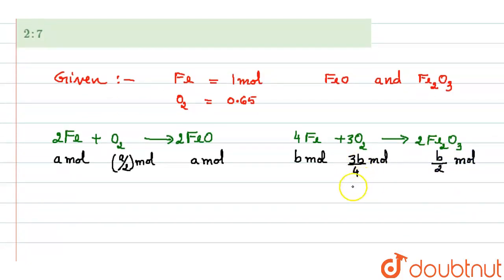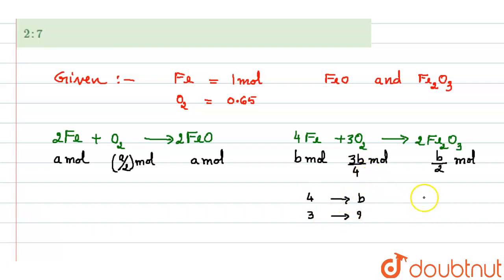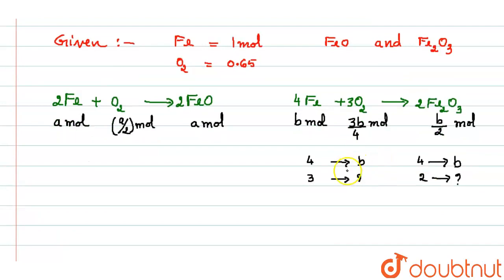How did we get 3b/4? We know entire 4 moles is taken as 'b' moles, so 3 moles will be 3b/4. Similarly, 2 moles out of 4 is 2b/4, which is b/2. This is simple cross multiplication.